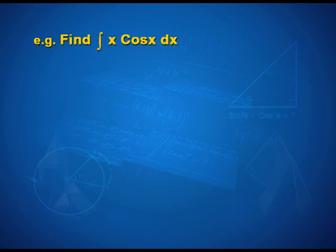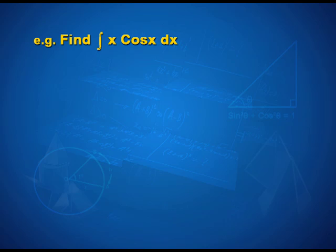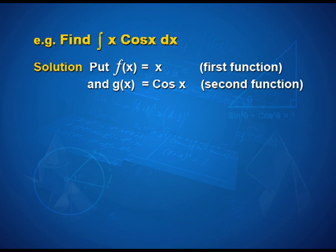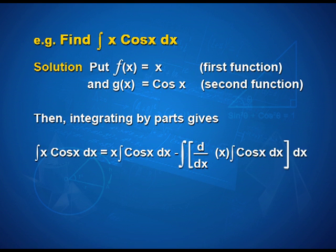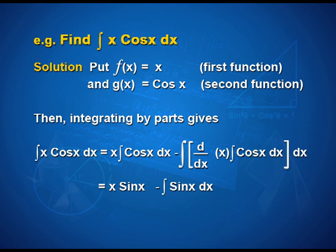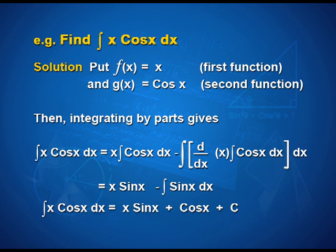Now let us solve some problems using this method. Find integral x cos x dx. For the solution, put f(x) = x as the first function and g(x) = cos x as the second function. Then integrating by parts we get: integral x cos x dx = x · integral cos x dx - integral [d/dx(x) · integral cos x dx] dx = x sin x - integral sin x dx. Therefore integral x cos x dx = x sin x + cos x + C.